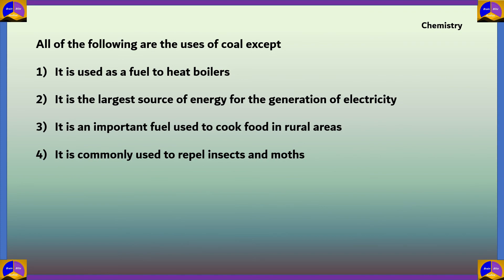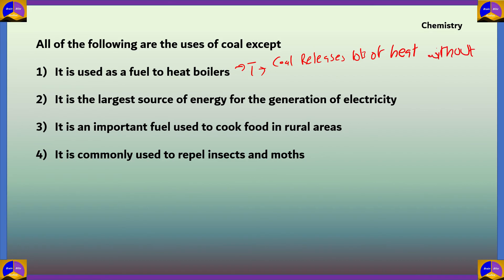Next question: all of the following are uses of coal except. We need to find which option is not a use of coal. Option 1 — coal is used as a fuel to heat boilers — this is true because coal releases lots of heat without odor or smoke, making it perfect as a fuel. So option 1 is a use of coal and therefore not the answer.